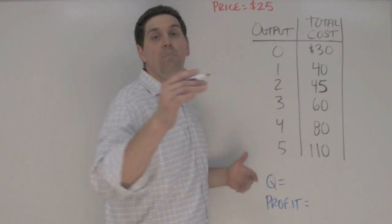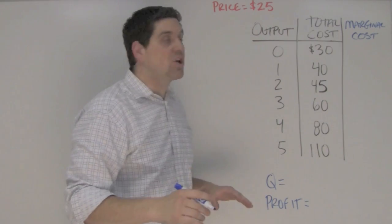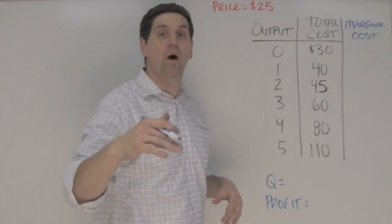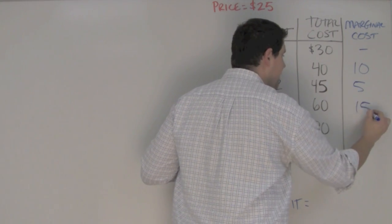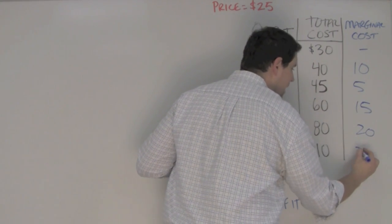The first step is calculating something called marginal cost. Marginal cost is the additional cost of producing one additional output. So in this situation marginal cost is 10, 5, 15, 20, and 30.